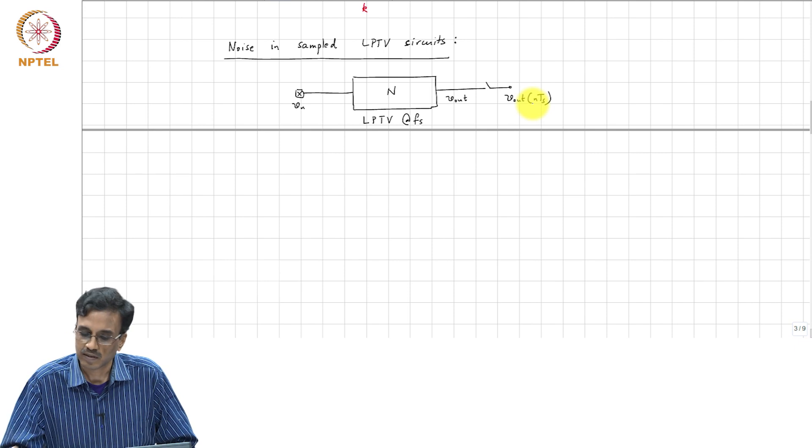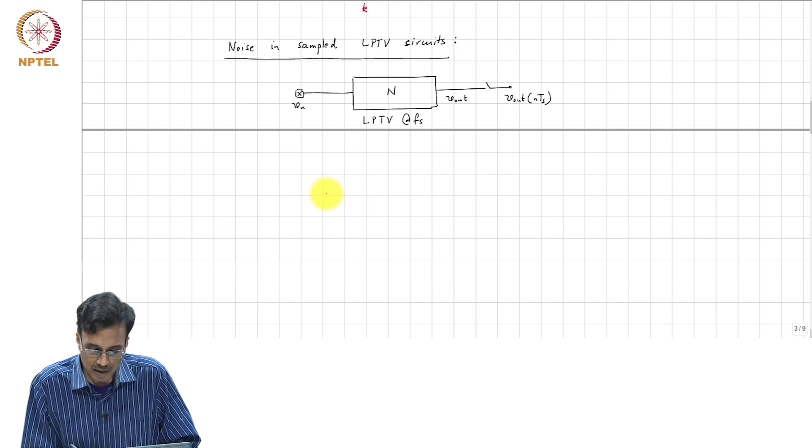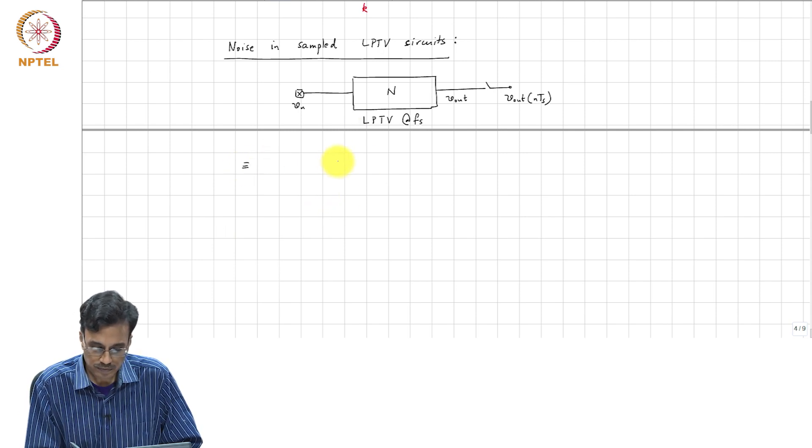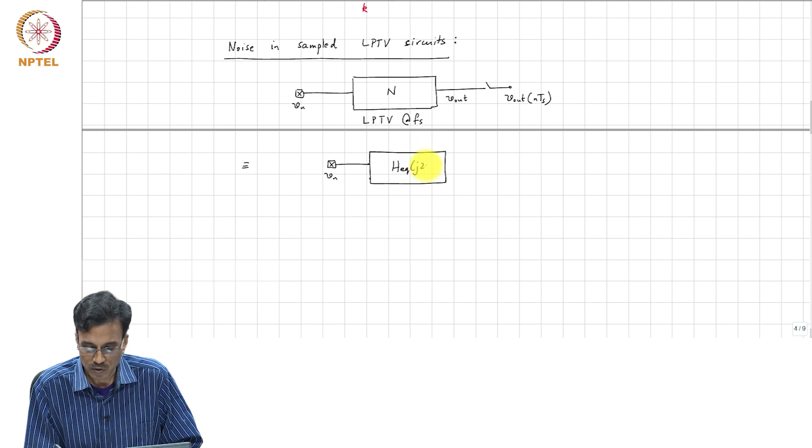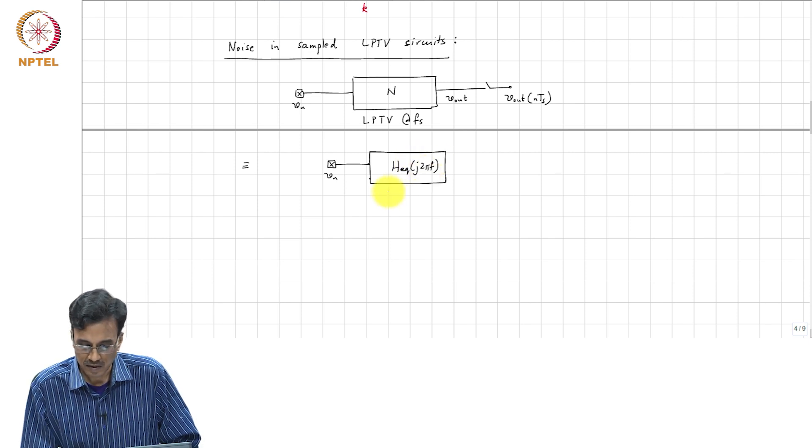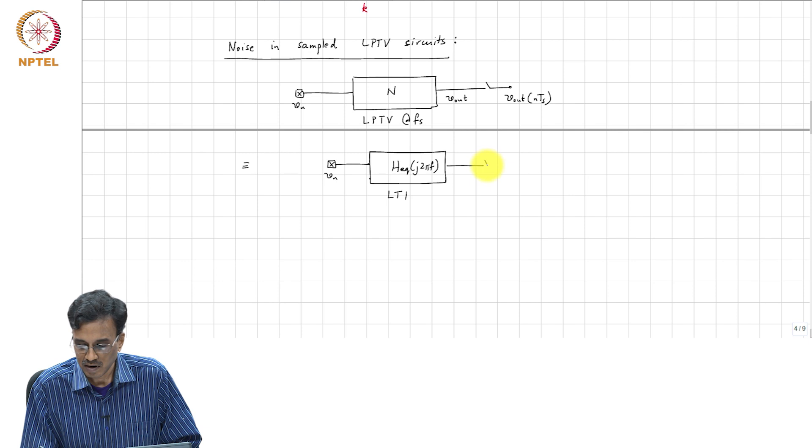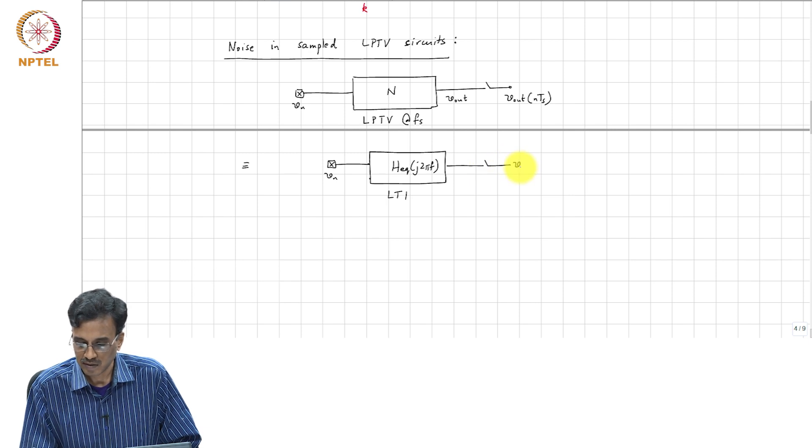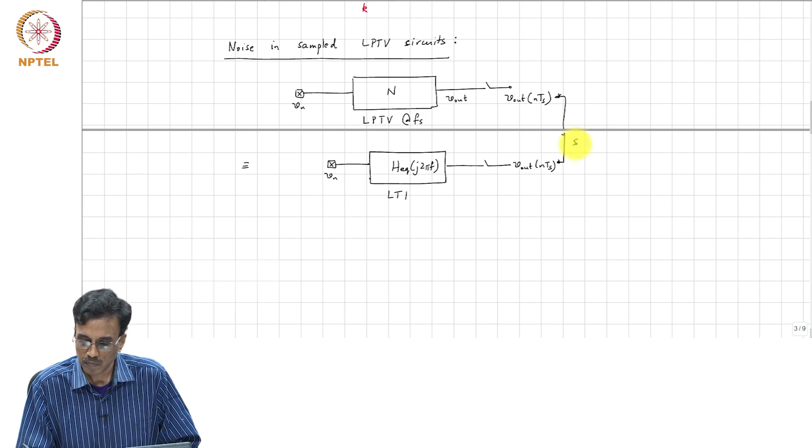Well, this is as you can imagine much easier to handle, because as we have already seen this is equivalent to taking V_N passing it through an LTI system H_equivalent of J 2 pi f. This is LTI, and this is V_out of N T_S. The sequence here and the sequence here are the same.